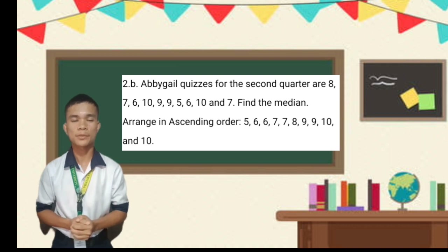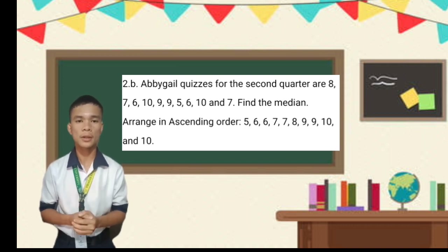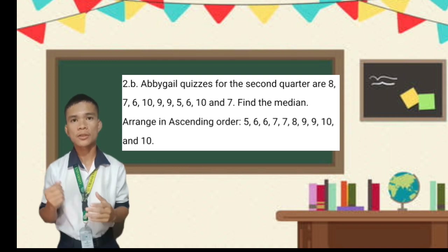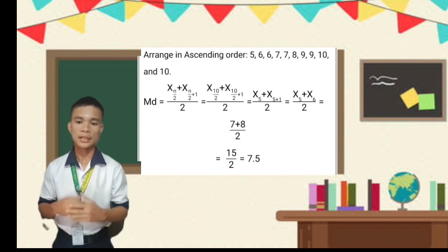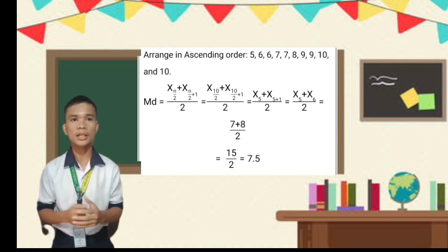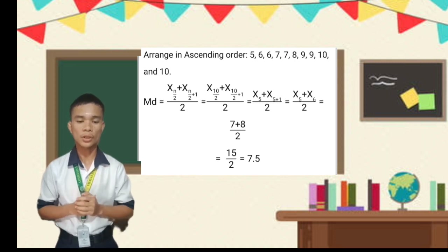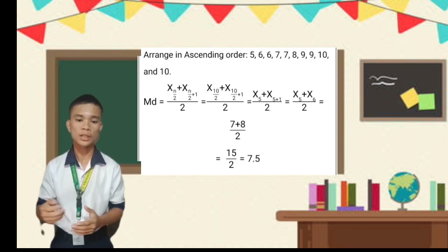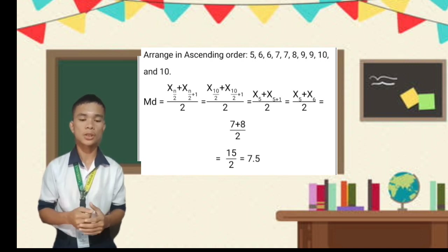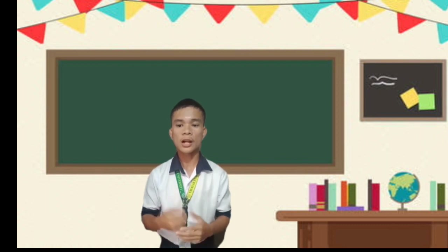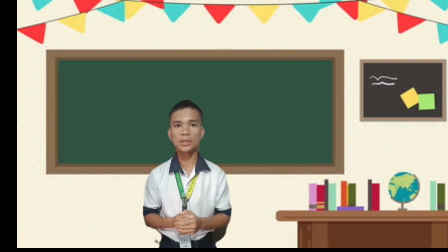Here is another example. Abigail's quiz scores for the quarter are: 8, 7, 6, 10, 9, 9, 5, 6, 10, and 7. Find the median. First, arrange in ascending order: 5, 6, 6, 7, 7, 8, 9, 9, 10, 10. Since there are 10 values (even), we use the even formula: Median = [x sub 5 + x sub 6] / 2 = (7 + 8) / 2 = 15/2 = 7.5. Therefore, half of Abigail's scores are 7.5 and below, while the other half are 7.5 and above.